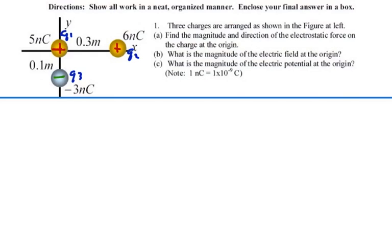Now we know that two like charges are repulsive, so there would be a force F1 pushing the charge at the origin to the left. There would be the same F1 magnitude force pushing the six nanocoulombs charge to the right. Unlike charges are attractive, so the charge at the origin will be attracted to the third charge downward. Let's call that F2.